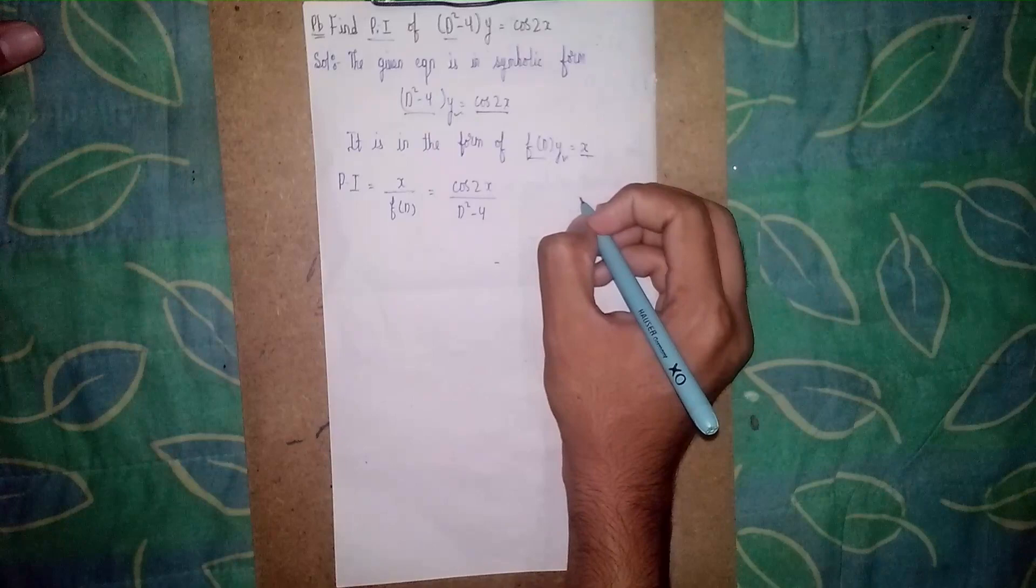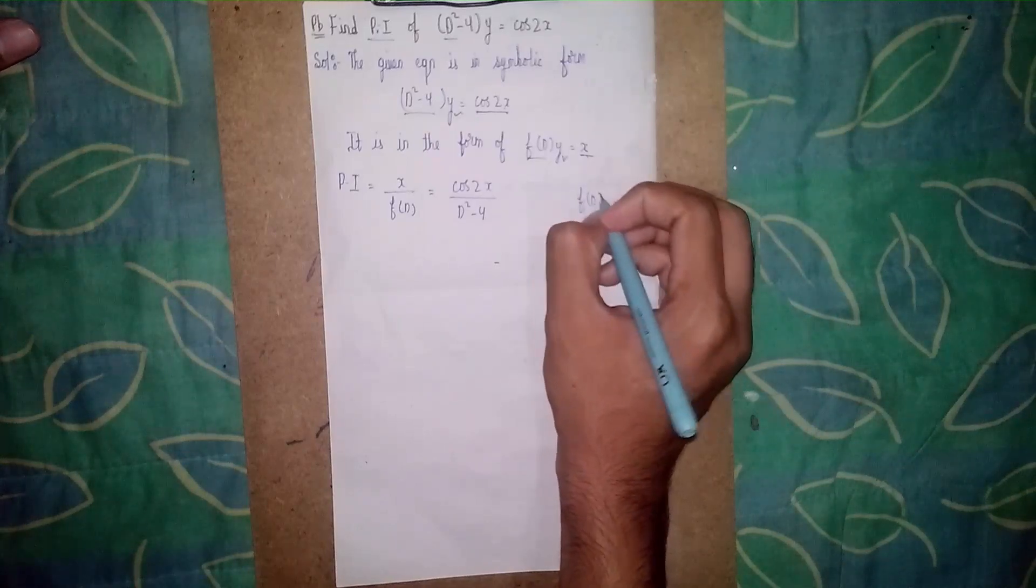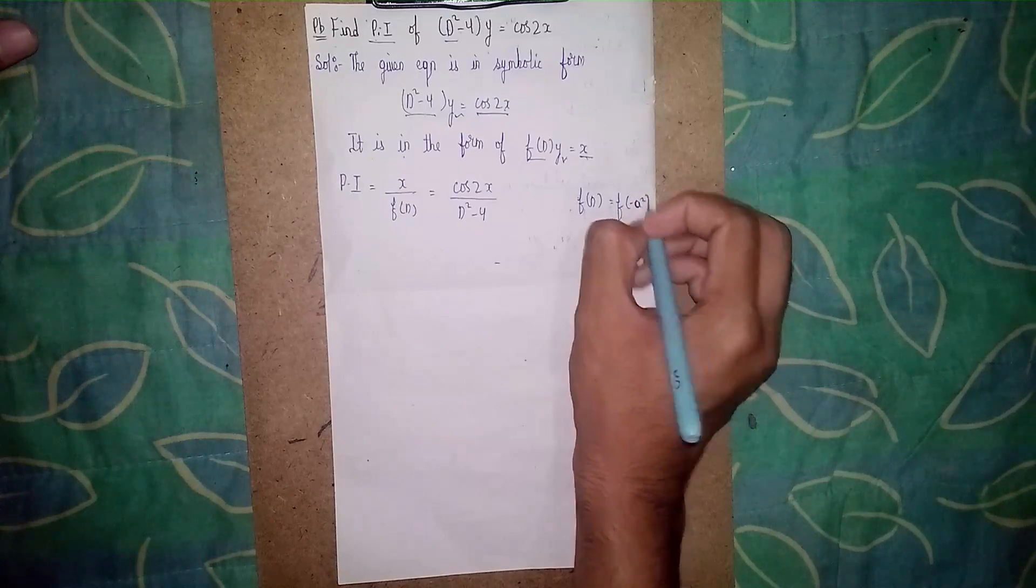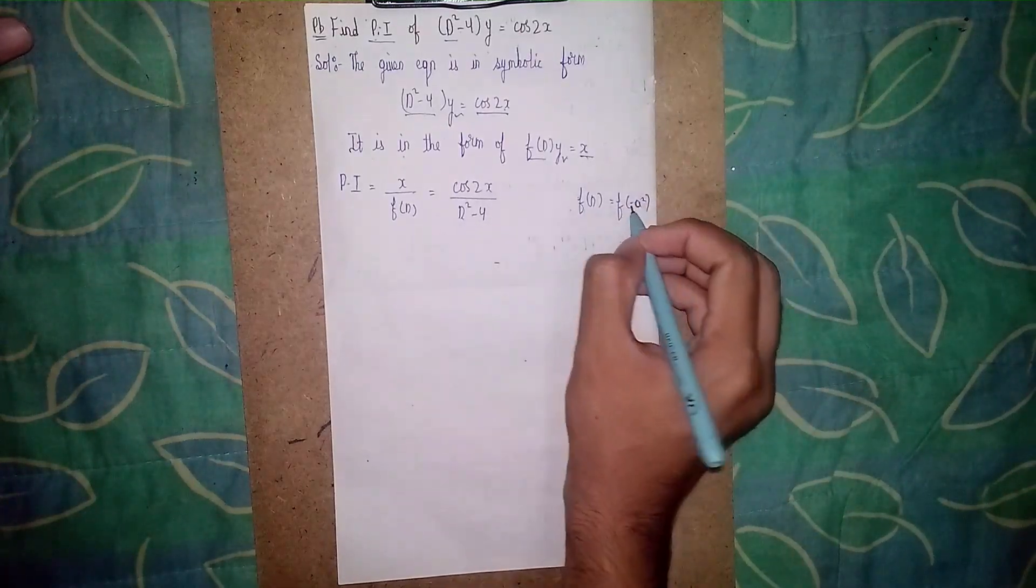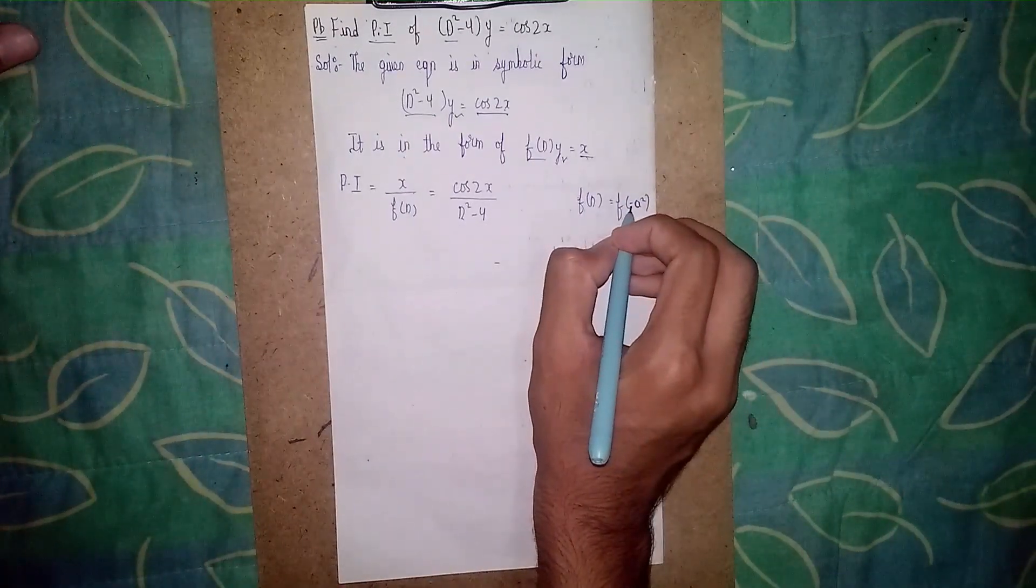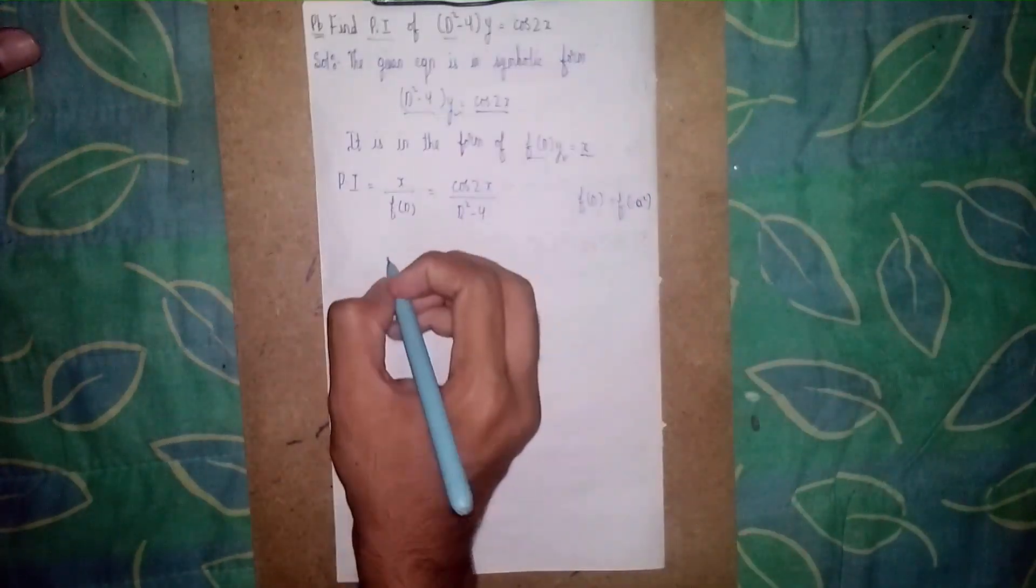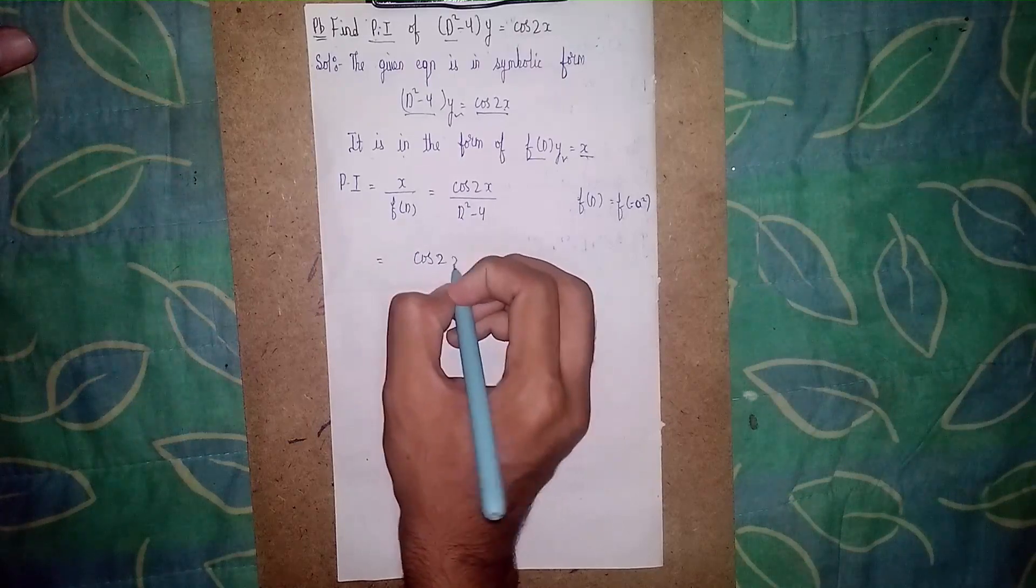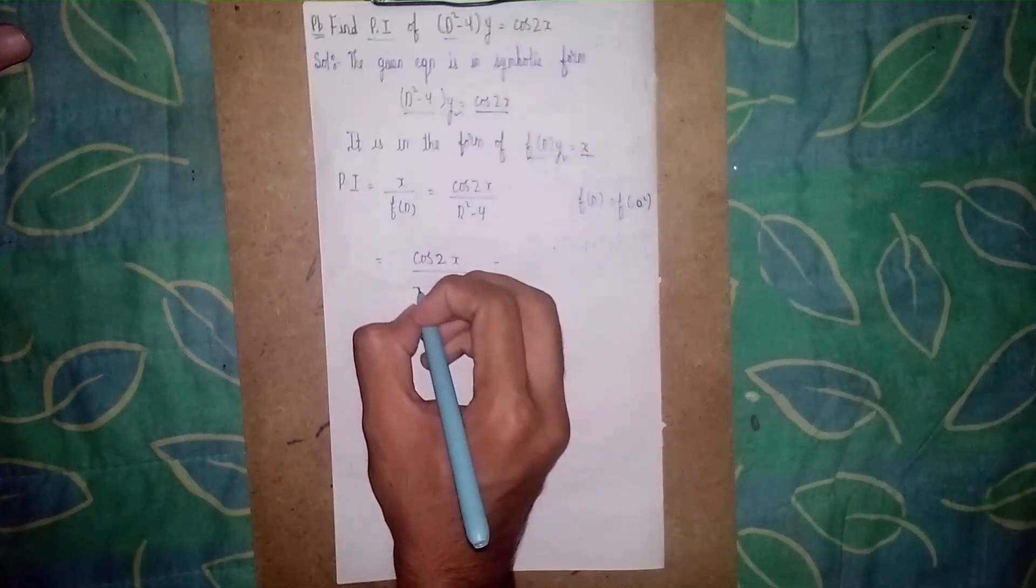So it becomes cos 2x by... now minus you have to take outside. Okay, minus you have to take outside, then 2 squared, then minus 4.